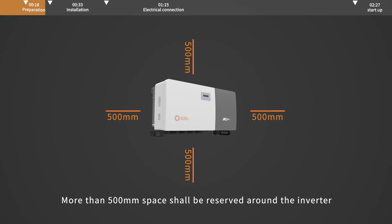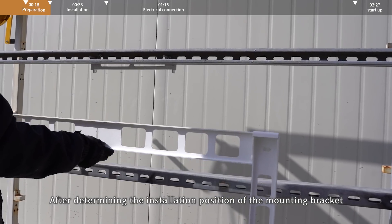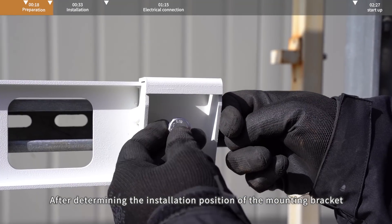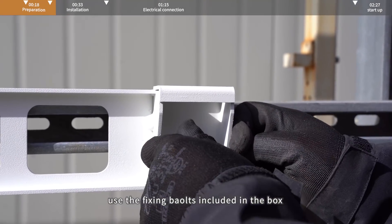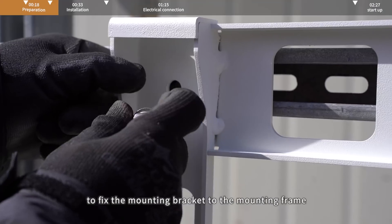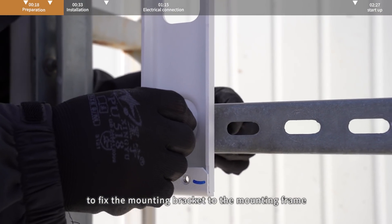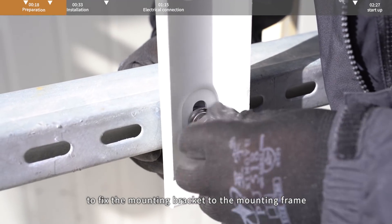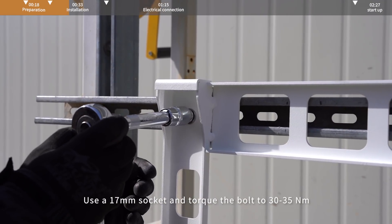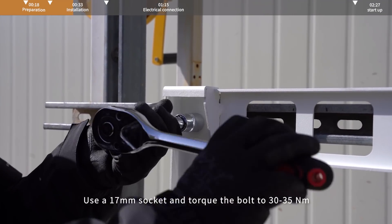More than 500 mm space shall be reserved around the inverter after determining the installation position of the mounting bracket. Use the fixing bolts included in the box to fix the mounting bracket to the mounting frame. Use a 17 mm socket and torque the bolt to 30-35 Nm.